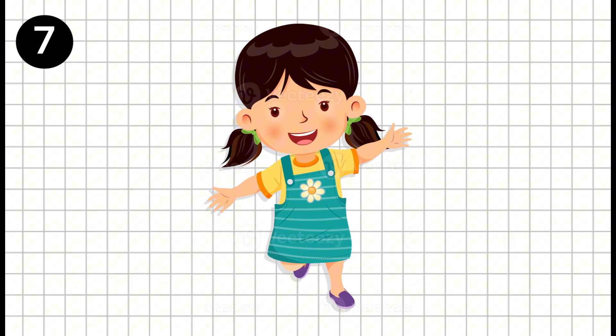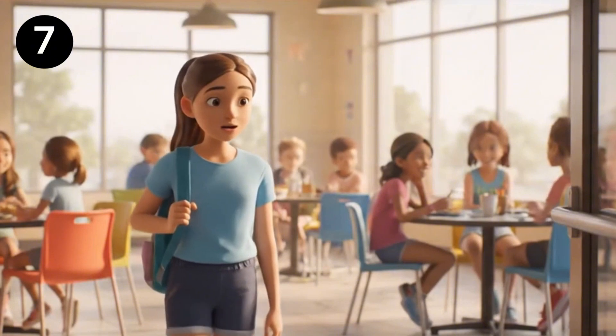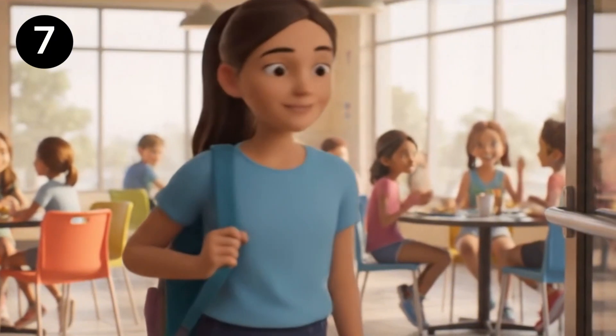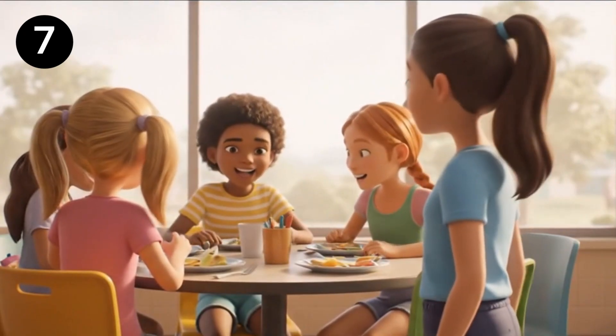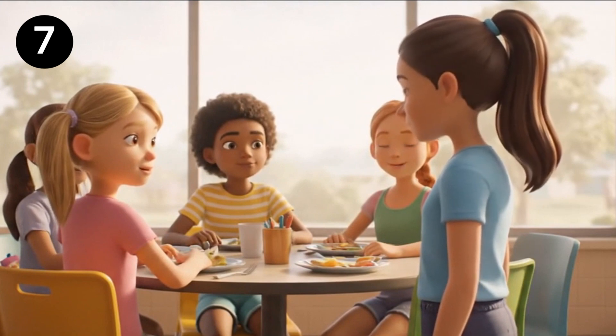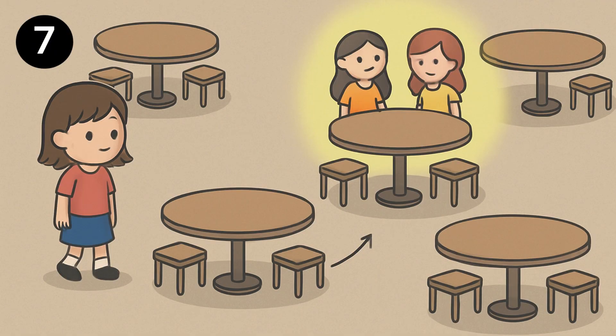Suppose there is a 10-year-old girl who has just joined a swimming club. On her first day, everyone goes to the pantry for juices or sandwiches. She takes a sandwich and juice but doesn't know anyone, so she can't decide where to sit. There are people of all age groups and genders. What she does is try to find where girls of a similar age — around 10 years old — are sitting and simply goes and joins them. We are doing something known as similarity-based assignment. This is nothing but K-nearest neighbors, where prediction or assignment happens based on the most similar neighbors.